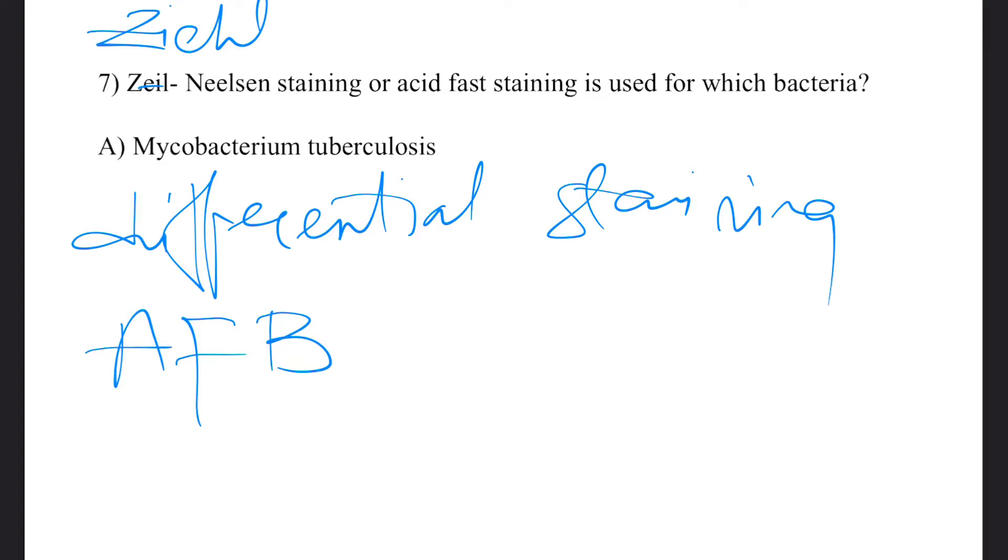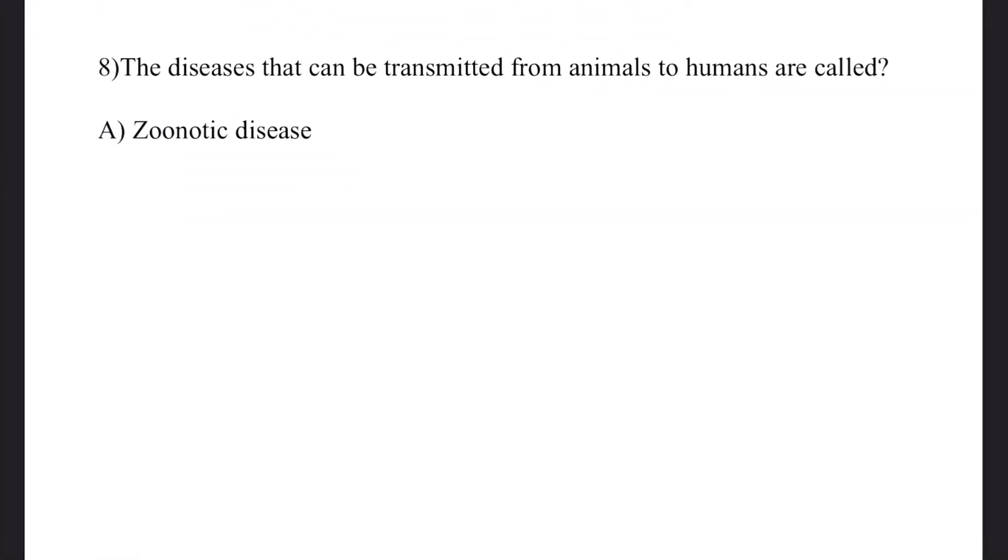Mycobacterium species, including Mycobacterium tuberculosis and Mycobacterium leprae. The next question: The diseases that can be transmitted from animals to humans are called? Answer: Zoonotic diseases. Diseases shared between animals and humans. Common examples include zoonotic influenza,